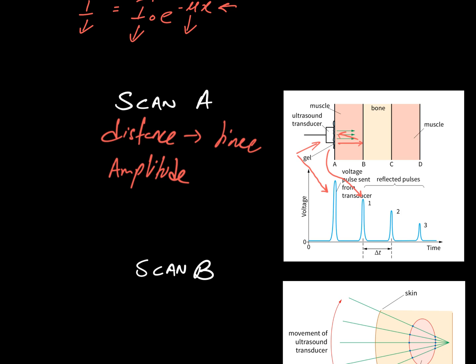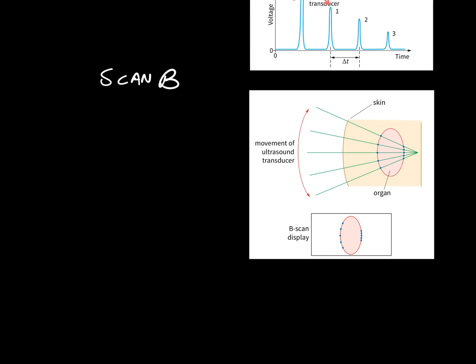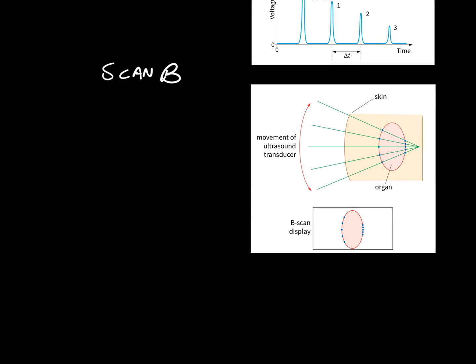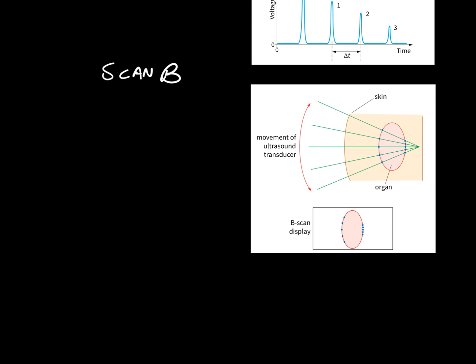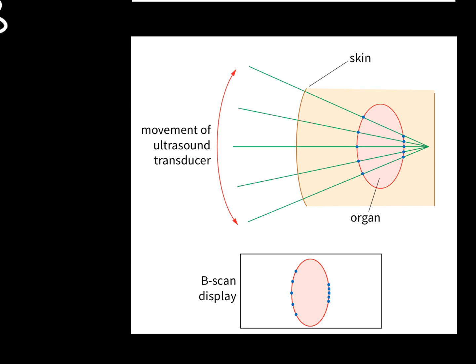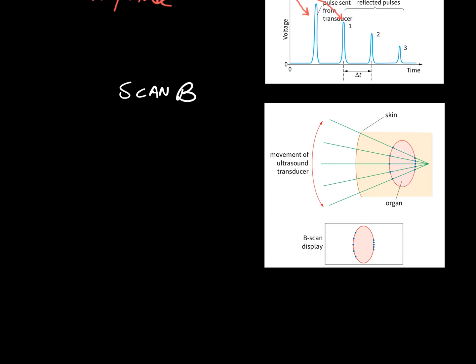We assess the time interval between reflections and the amplitudes of the peaks to find out the thickness of each medium. In Scan B, the ultrasound probe is moved around at different angles to get reflections from every boundary. These reflections are detected by the probe and connected to a computer, which then draws an image of the internal structure.